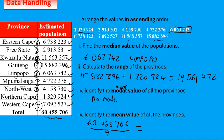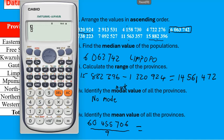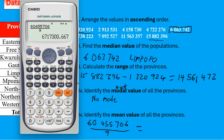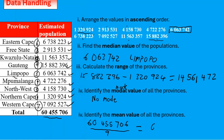Working that out on the calculator, our mean value — remembering we're talking about number of people so the answer must be rounded to a whole number — the mean number is six million, seven hundred and seventeen thousand, three hundred and one.